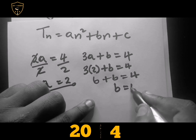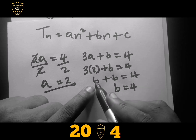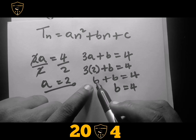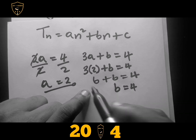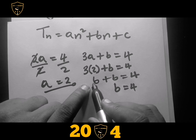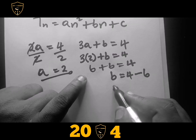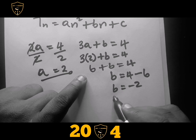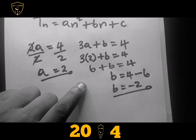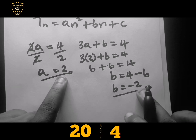Now we solve for b. Remember, when you take a term from one side of the equal sign to the other, the sign changes. So the positive 6 becomes negative 6 on the other side. Therefore b equals 4 minus 6, which is negative 2.